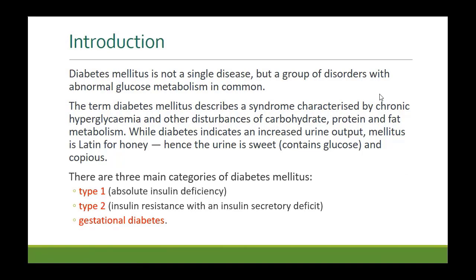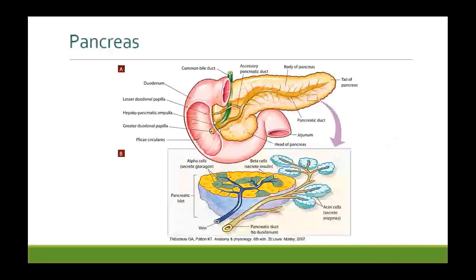There are three main types of diabetes. Type 1 is absolute insulin deficiency. Type 2 is insulin resistance with an insulin secretory deficit. The third type is gestational diabetes, which develops in pregnant women.